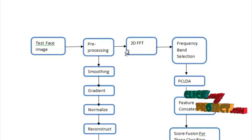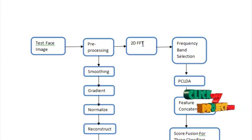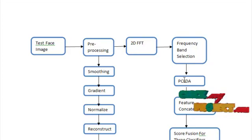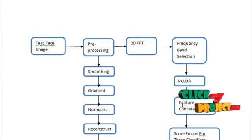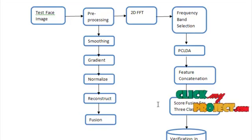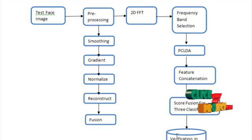Then construct 2D FFT for the input image and repeat the steps of frequency band selection, PCA, and LDA, followed by feature concatenation and score fusion of the classifier. You can then verify the input illuminated images from the database.